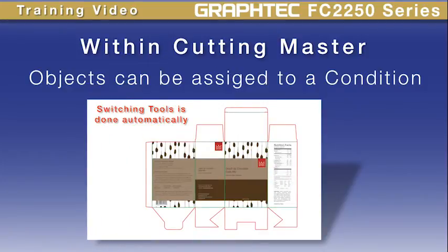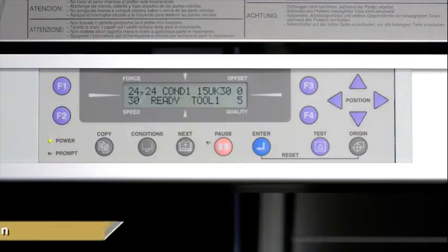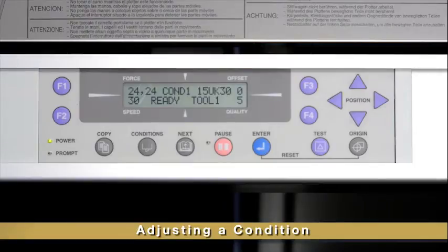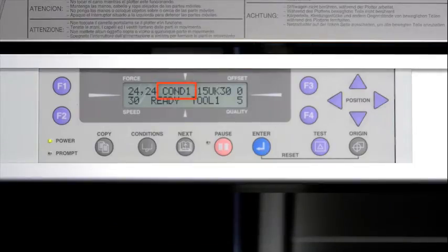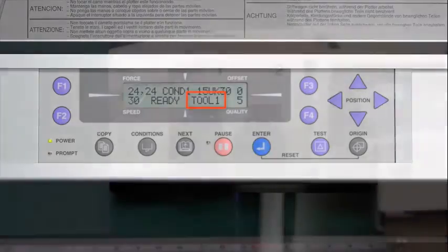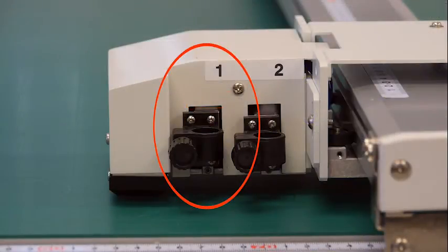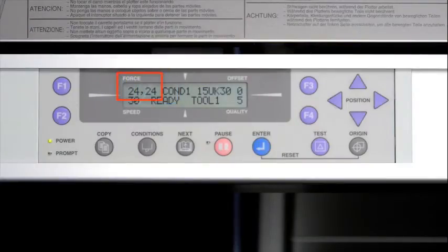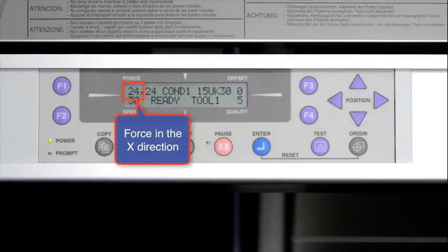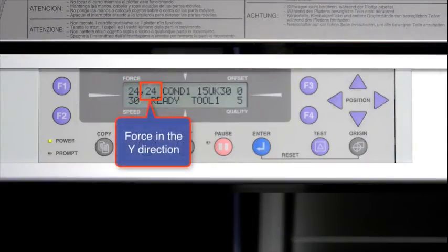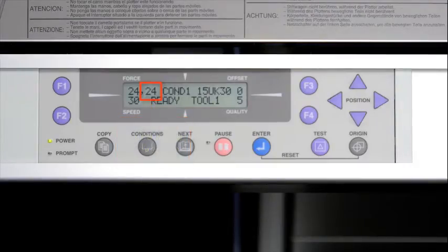So instead of switching the toolhead when an operation is completed, it's done automatically. Looking at the display screen on the control panel will show the current condition — right now it's condition 1. The tool number indicates the tool holder that this condition is assigned to; in this case, tool holder 1. There are two force values: the first is the force when the tool head is moving in the X direction (side to side), and the second is the force when cutting in the Y direction (up and down).